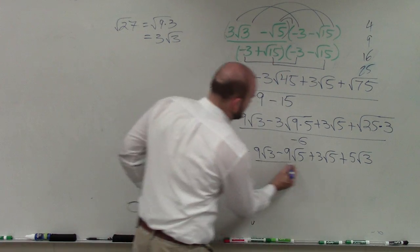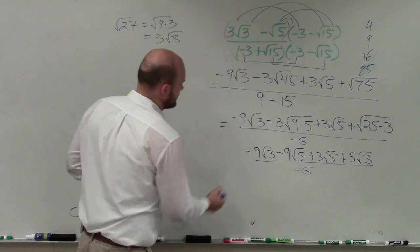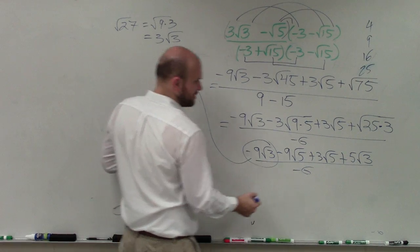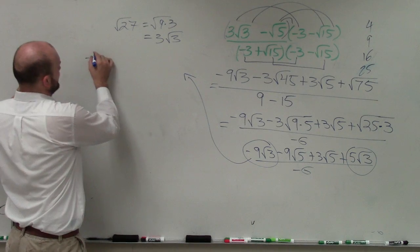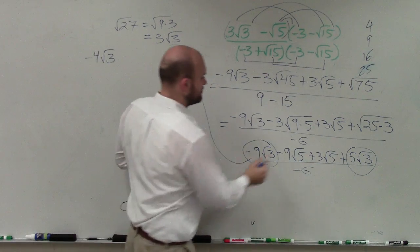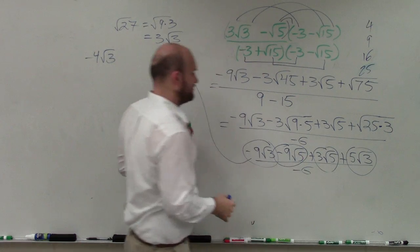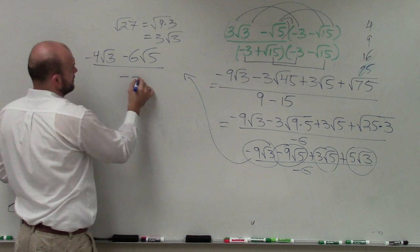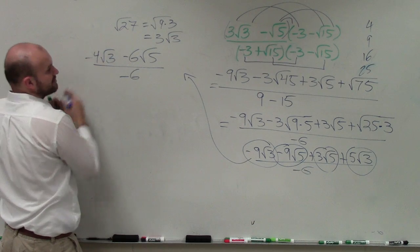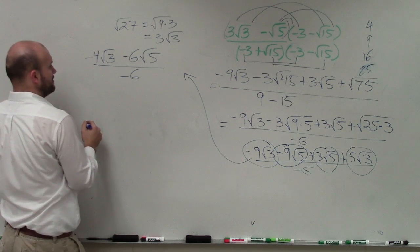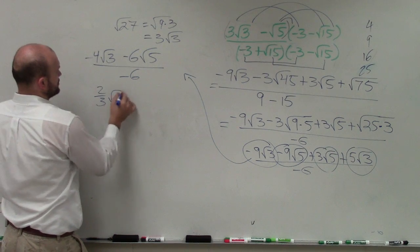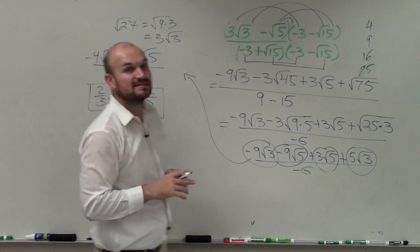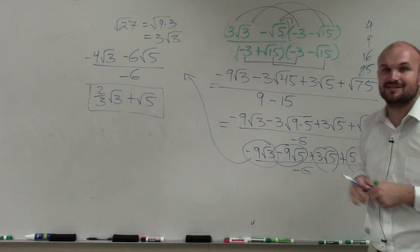This is all divided by negative 6. Now I look at my radicands and combine like terms: negative 9 square root of 3 and 5 square root of 3 become negative 4 square root of 3. Then negative 9 square root of 5 and 3 square root of 5 become negative 6 square root of 5. All divided by negative 6. Dividing through by negative 6, you get positive 2 thirds square root of 3 plus the square root of 5. And that is how you simplify a radical expression by rationalizing the denominator.